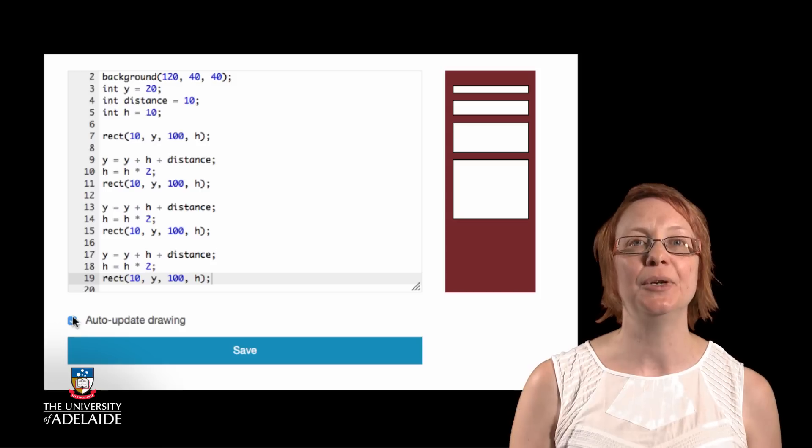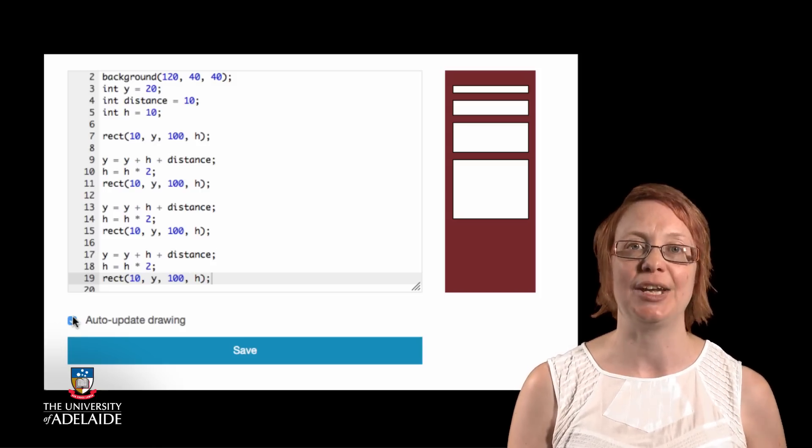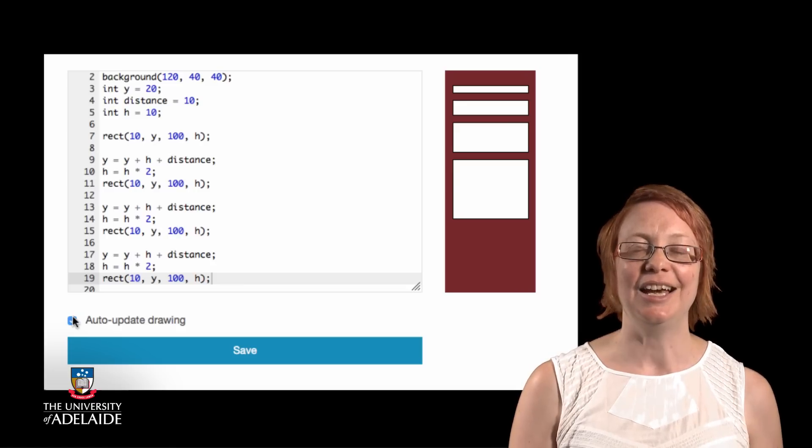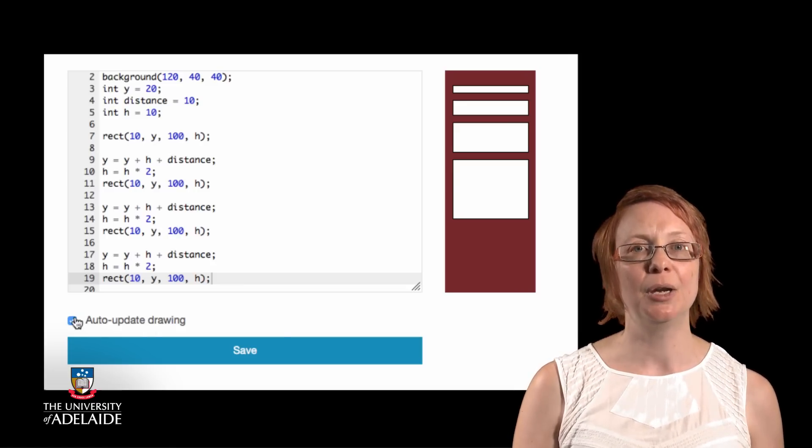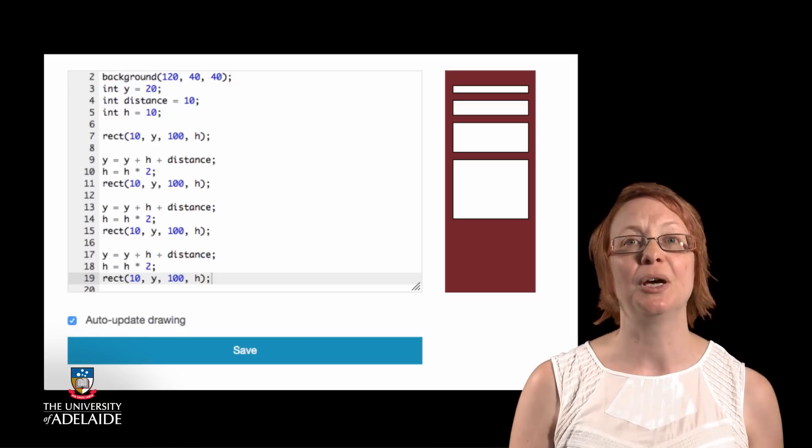In this example, we are using three variables in our program to control both the location and the height of our shapes. As we can see from this last example, using variables does make our programs a little more complex, but it also makes them much more powerful.